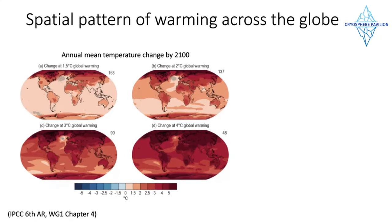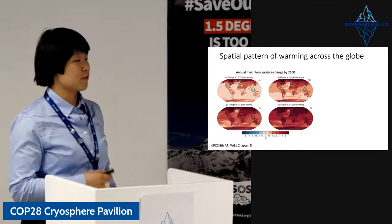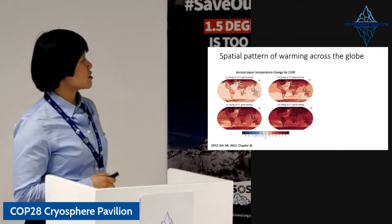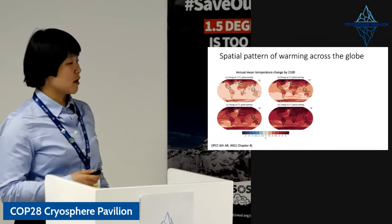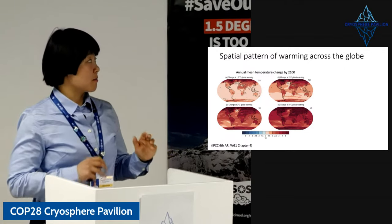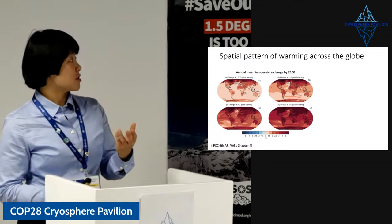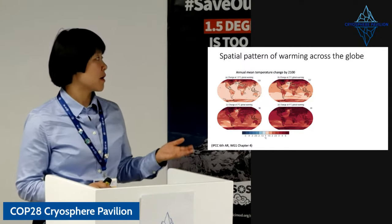What does the spatial pattern of warming across the globe look like, taking these different scenarios? The top-right panel shows annual mean temperature change by end of the 21st century for 1.5 degrees warming; the other panels show 2, 3, and 4 degrees scenarios. In the first two plots, Arctic regions are amplified due to polar amplification. The red regions will experience much higher warming compared to the global average value.